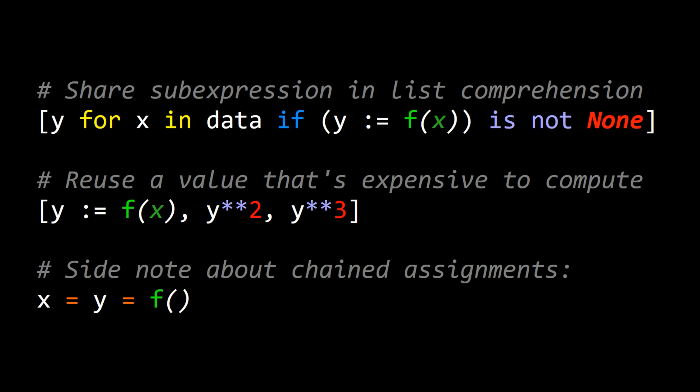As a side note, I don't like to use chained assignments, but chained assignments have the same feature that the function f is only computed once. So this particular statement here is equivalent to computing f once, assigning it to a temp variable, and then assigning that temp variable to both x and y.